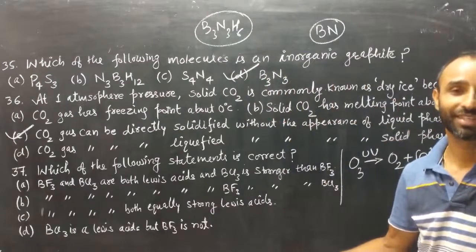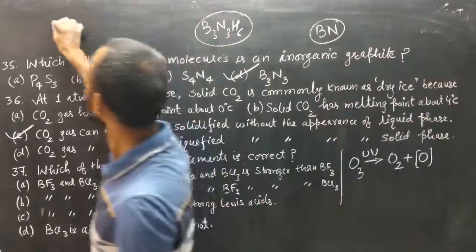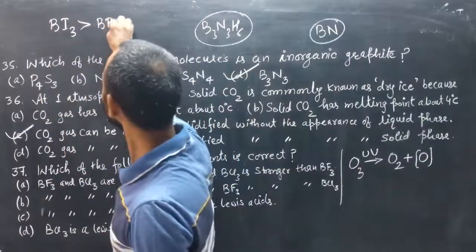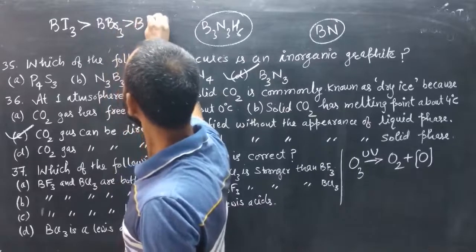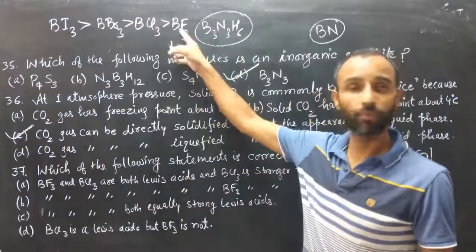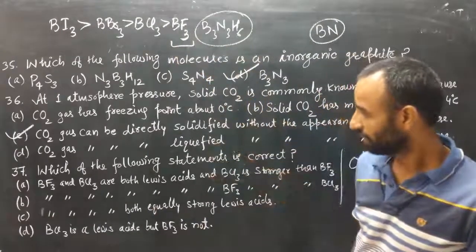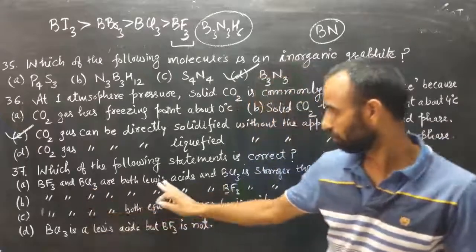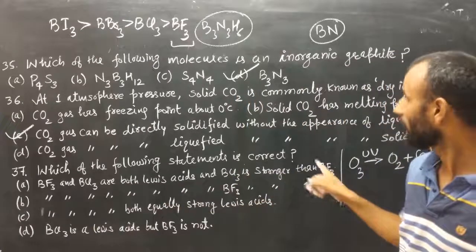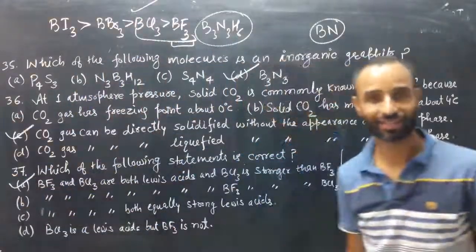Question 37 — again about p–π back bonding: all boron halides are Lewis acids. The order of Lewis acid strength is BI3 > BBr3 > BCl3 > BF3. BF3 is the weakest Lewis acid because p–π back bonding is maximum in BF3. BCl3 is stronger than BF3. So option A (BCl3 is a stronger Lewis acid than BF3) is correct.